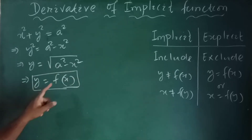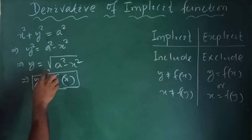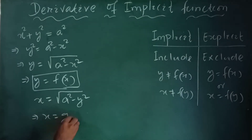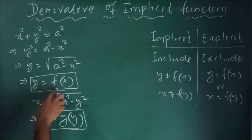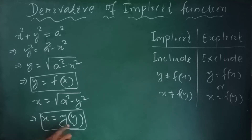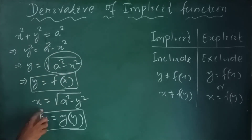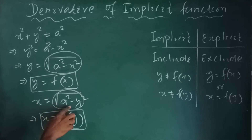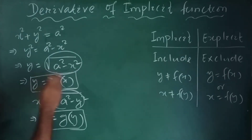So y can be a function of x alone. Similarly, we can also find the value of x: x equals root over of a squared minus y squared. That means x is a function of y. So here y is f of x and x is g of y. Y can be expressed as a function of x only, and x can be expressed as a function of y only.